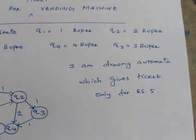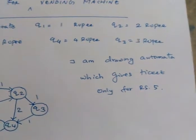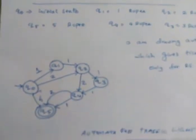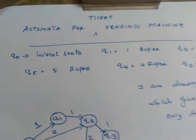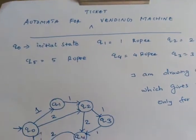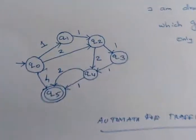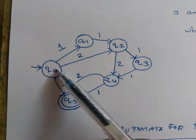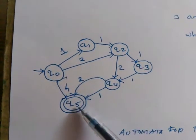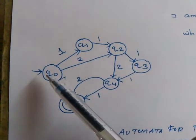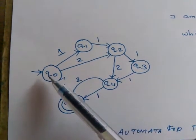That machine can give only a 5 rupee ticket. We can draw a diagram for this. Q0 is the starting state and Q5 is the ending state. Q0 represents the initial state of the machine.